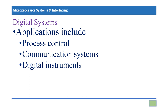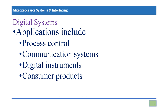A third application is digital instruments. There are a variety of instruments which measure various things in our surroundings — for example, temperature measurement, weight measurement, height measurement, and so on. Such instruments are highly accurate and are based upon digital systems, microprocessors, or microcontrollers. Another very common and useful application is domestic or consumer products, such as refrigerators and washing machines, which are applications of digital systems with dedicated microcontrollers or microprocessors controlling their overall mechanism.